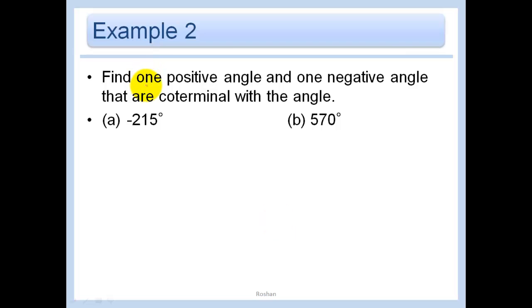Find one positive angle and one negative angle that are coterminal with negative 215 degrees first. So why don't we just add 360, and we would get 145 degrees. And then let's do negative 215. Why don't we just subtract 360? And we would get negative 575 degrees.